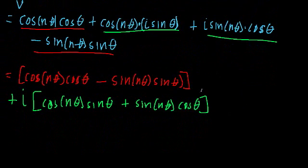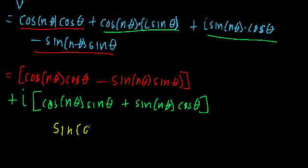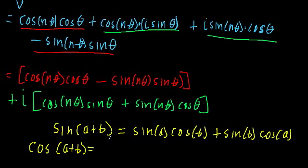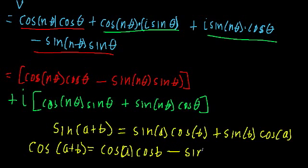Now what we need to do is simplify these up a bit, and we can do that using some trig identities. Particularly we're going to use the adding angles identity: sine of a plus b equals sine of a times cosine of b plus sine of b times cosine of a. And we also know that cosine of a plus b equals cosine a times cosine b minus sine a times sine b.